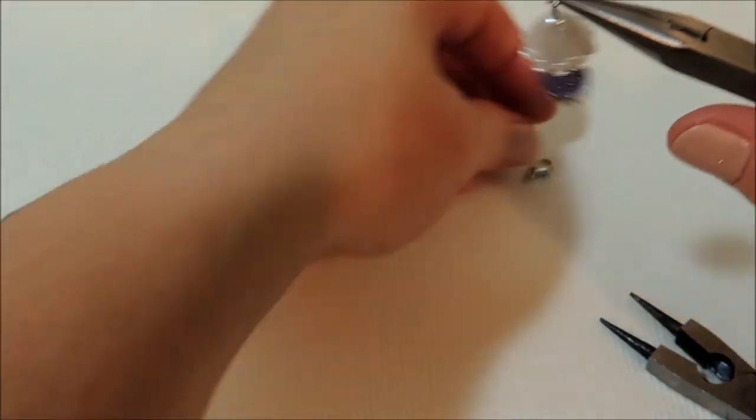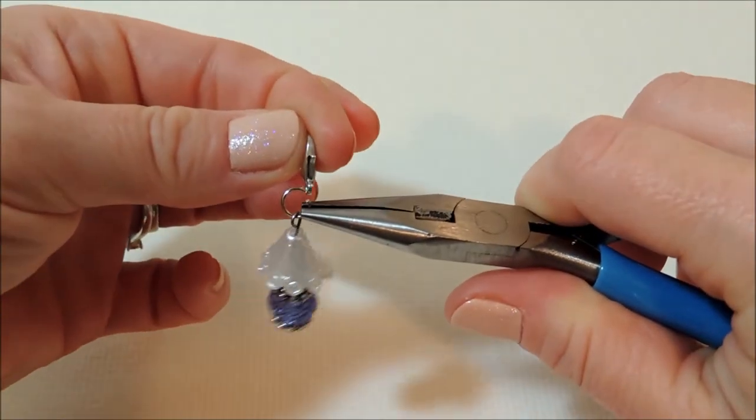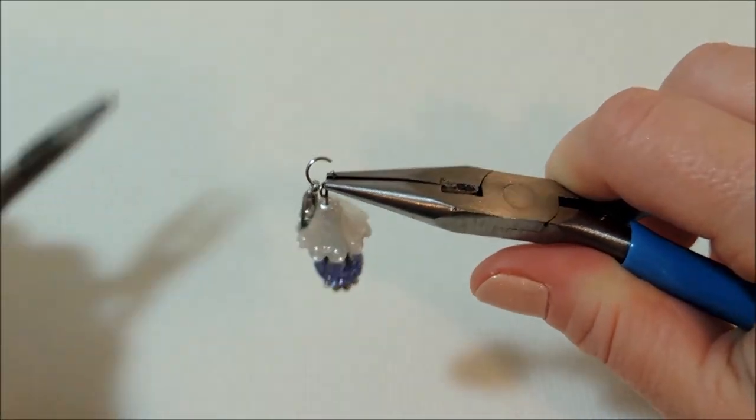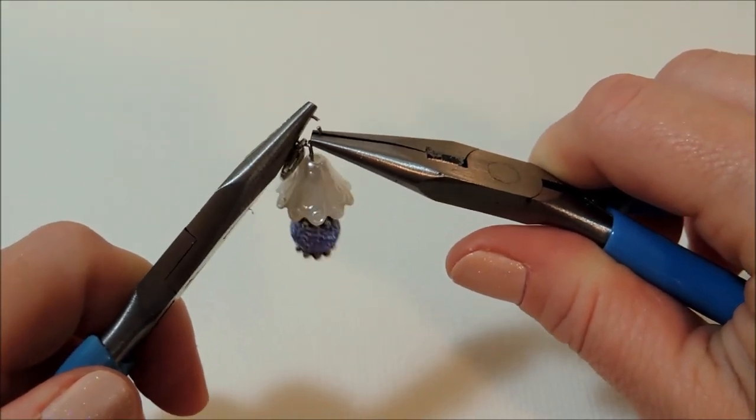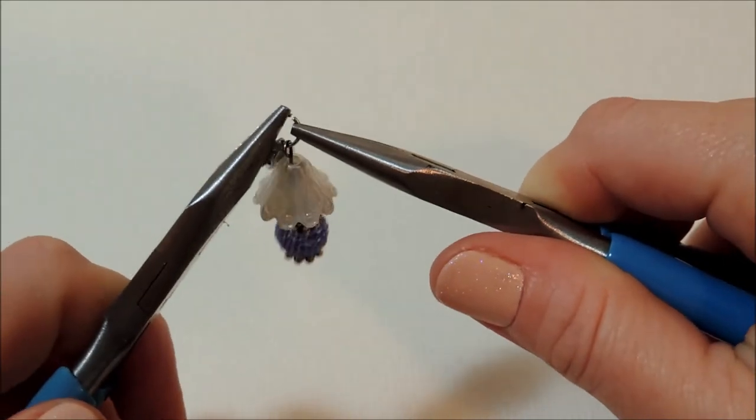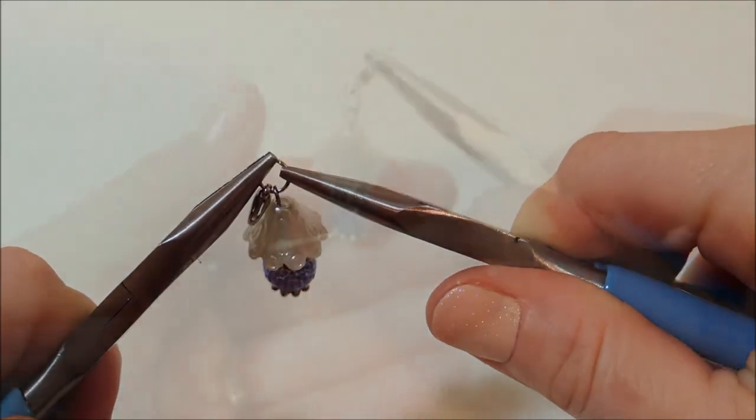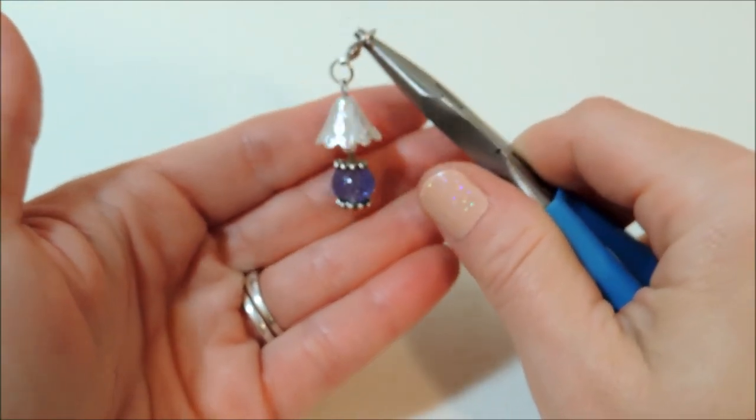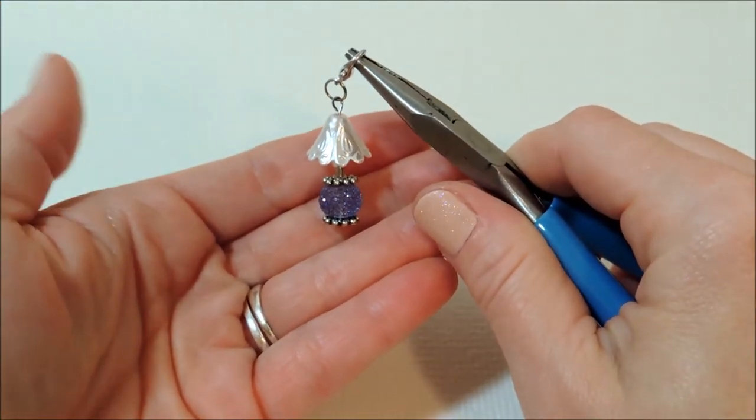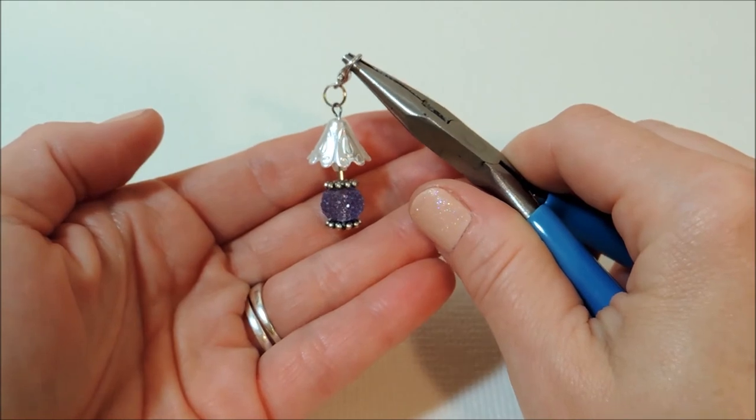And then we'll attach our jump ring and lobster clasp. Just dangle that on, and then your clasp, and close it back up. And isn't that an adorable little table lamp? I think that is just so cute.